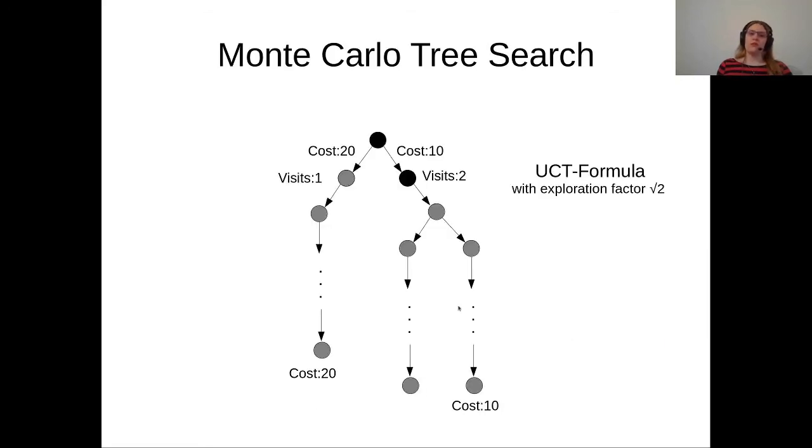To then solve this problem, we want to use Monte Carlo tree search to help guide our lifted hierarchical planner because we can't use any heuristics since there aren't any for lifted hierarchical planning.